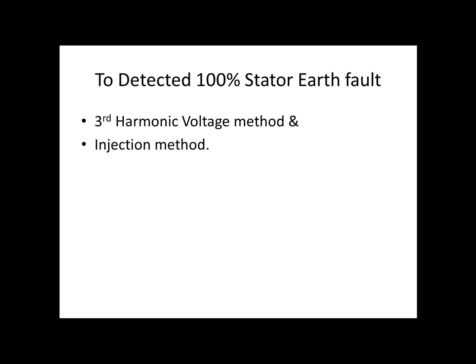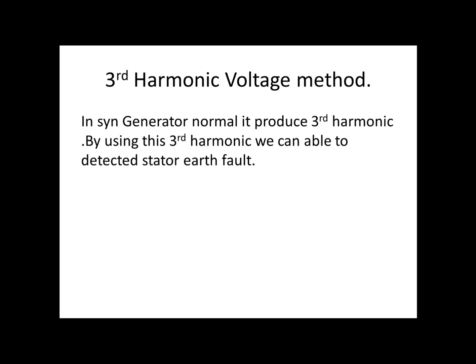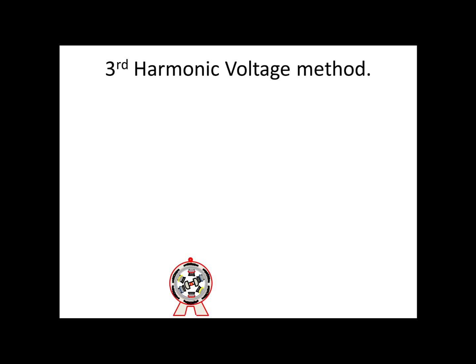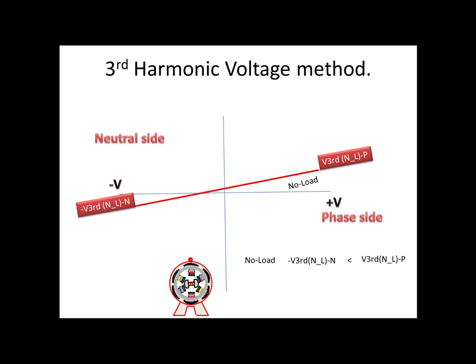First we will see about the third harmonic voltage method. In a synchronized generator, normally it produces third harmonic voltage on the winding. By using this third harmonic voltage, we can detect stator earth fault. First we will see the third harmonic graph on a synchronized generator. For this, we should have two VTs.